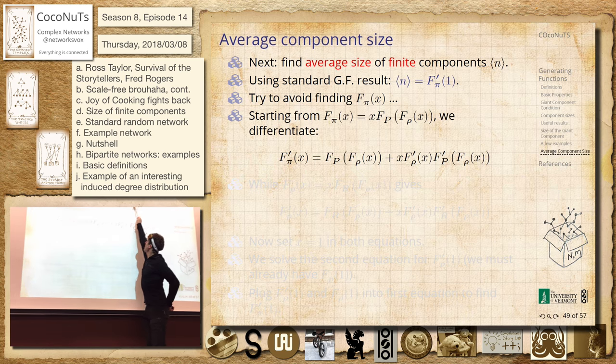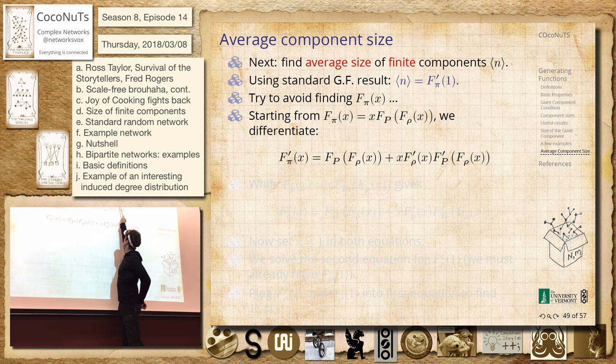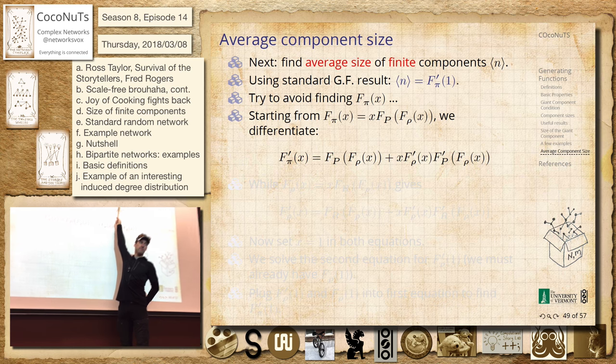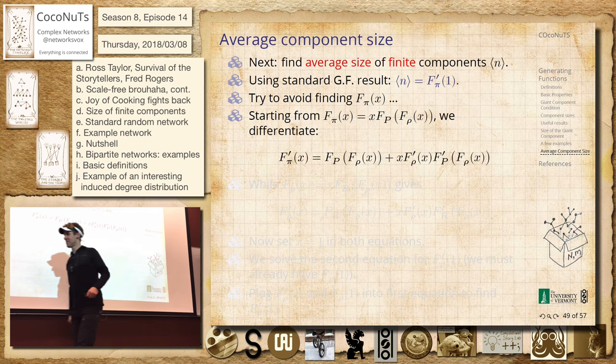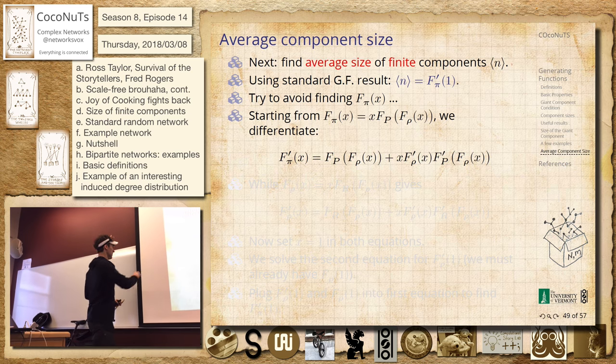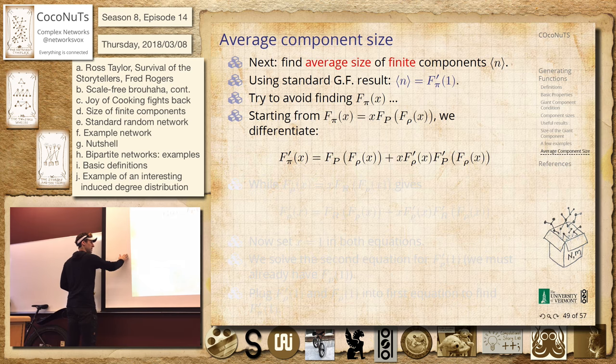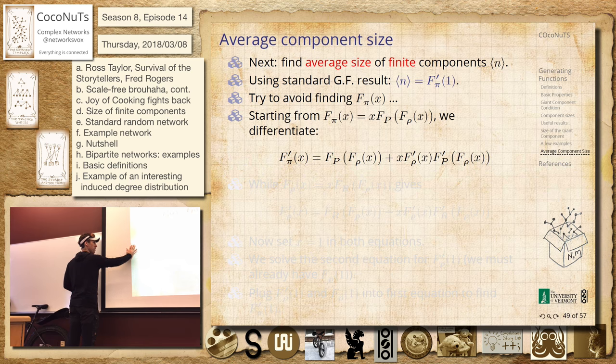So if you have a generating function for a distribution and you want to find the average that distribution is associated with, then you take the first derivative and set x equal to 1. Isn't this madness? We're going to—we've got x to the k, differentiate that. The k comes down, so we've got k x to the k minus 1. Set x equal to 1, then that piece goes away, and now we've got a sum of k p_k basically. So it's the average of k.